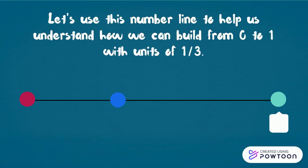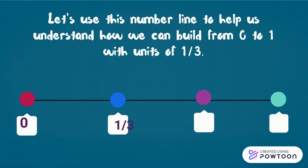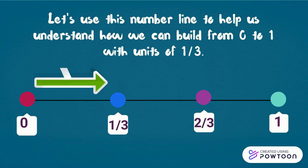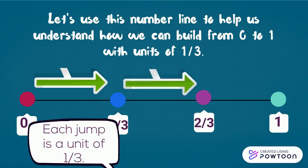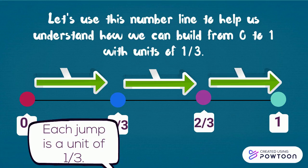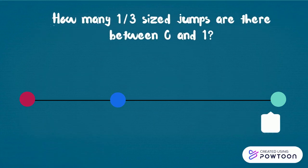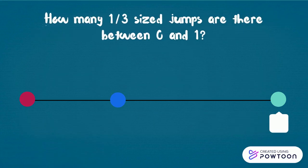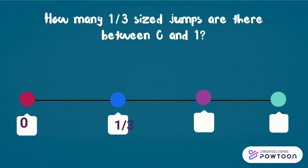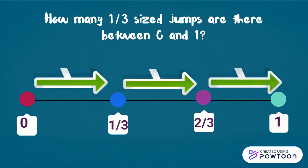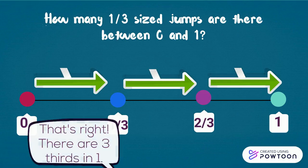Let's use this number line to help us understand how we can build from zero to one with units of one third: zero, one third, two thirds, one. Each jump is a unit of one third. How many one-third sized jumps are there between zero and one? That's right — there are three thirds in one.